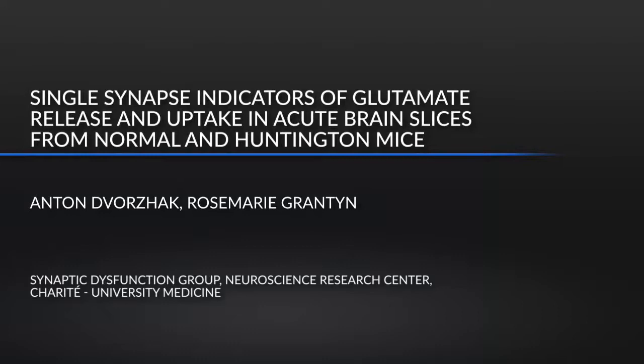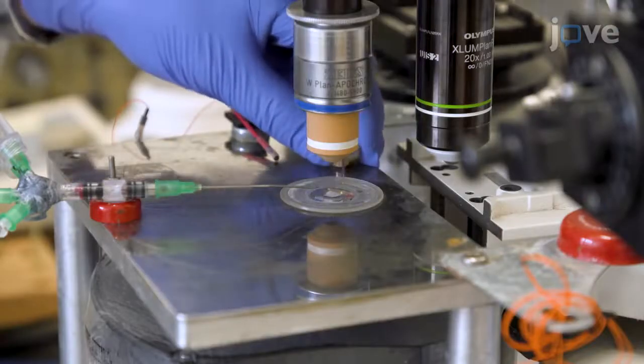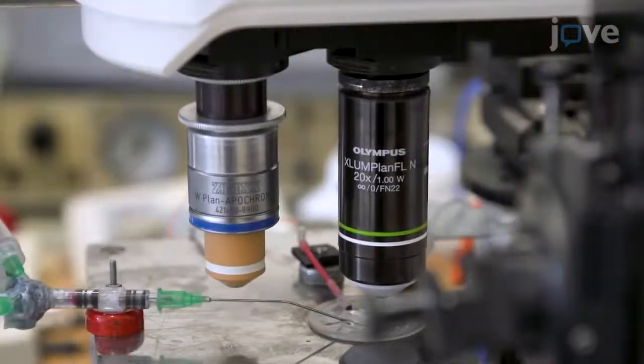High-resolution imaging of single synapses expressing a fast glutamate sensor allows the detection of local mismatch between transmitter release and uptake. In the case of disease, this method can be used to identify dysfunctional synapses.